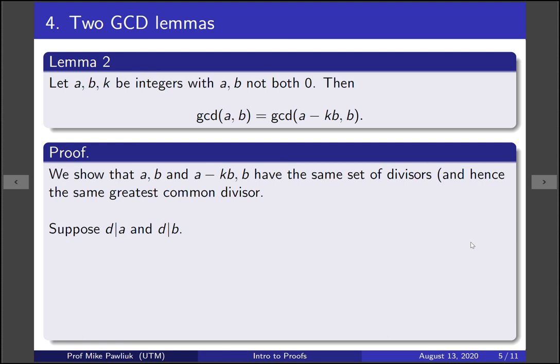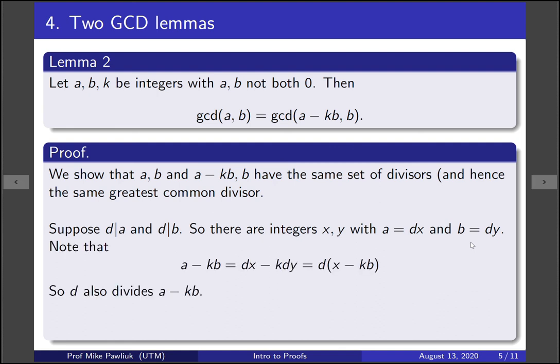So let's start out with a divisor of both a and b, and let's show that d also divides a minus kb and b. This will be a definition unwinding proof. By definition, there are integers x and y where a equals dx and b equals dy. Now let's compute a minus kb using this. Well a minus kb is we replace a with dx and we replace b with kdy. So we replace b here with dy. And then we can factor out the d.